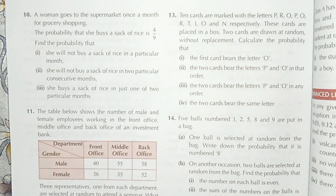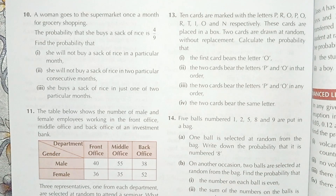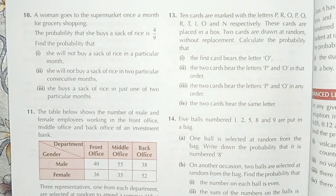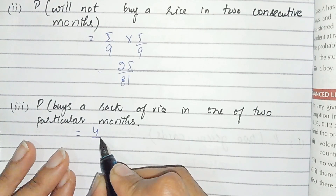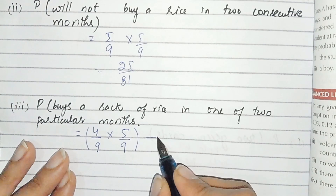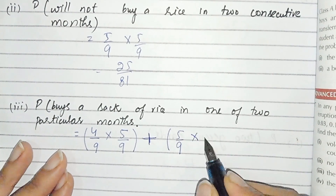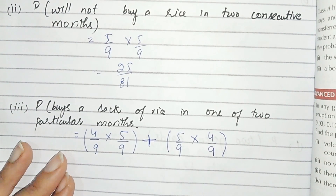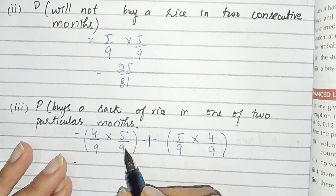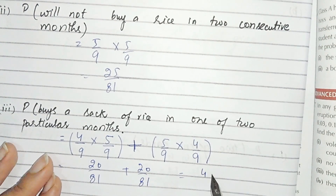For part 3, we find the probability she buys a sack of rice in just one of two particular months. This means either she buys in month 1 and not in month 2, or she does not buy in month 1 and buys in month 2. We add both probabilities: P(buy) × P(not buy) + P(not buy) × P(buy) = 4/9 × 5/9 + 5/9 × 4/9 = 20/81 + 20/81.